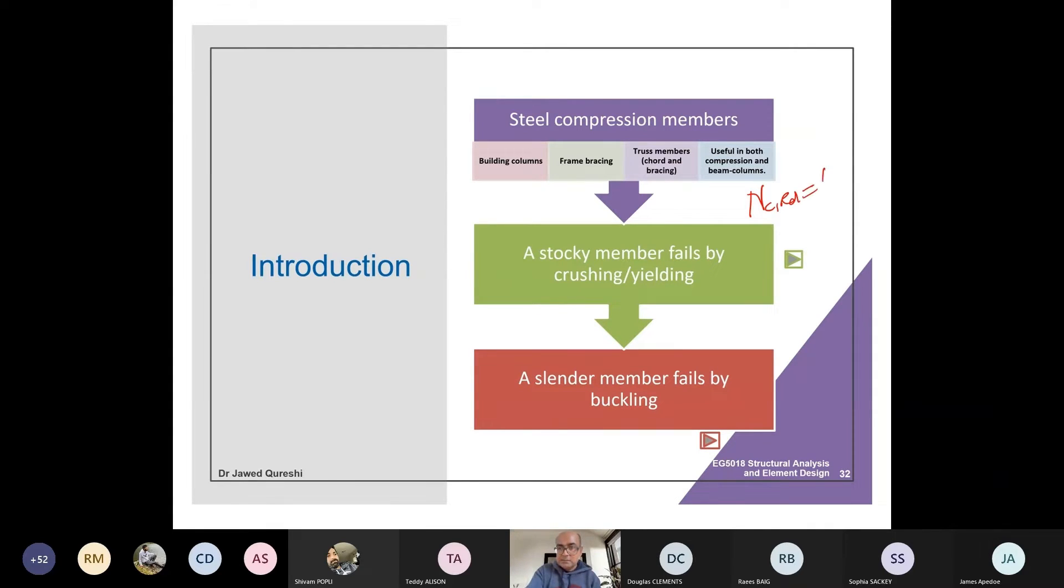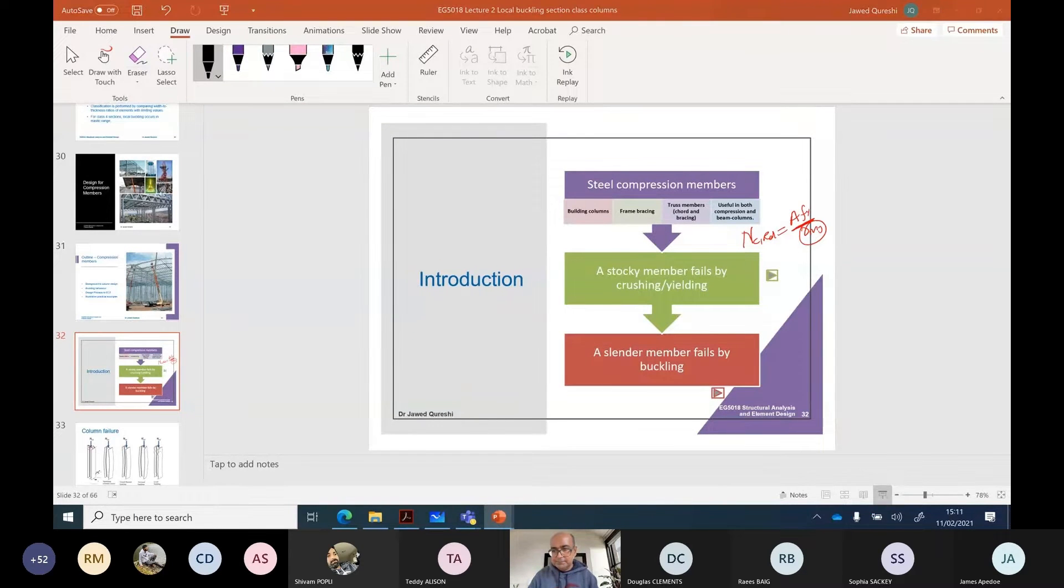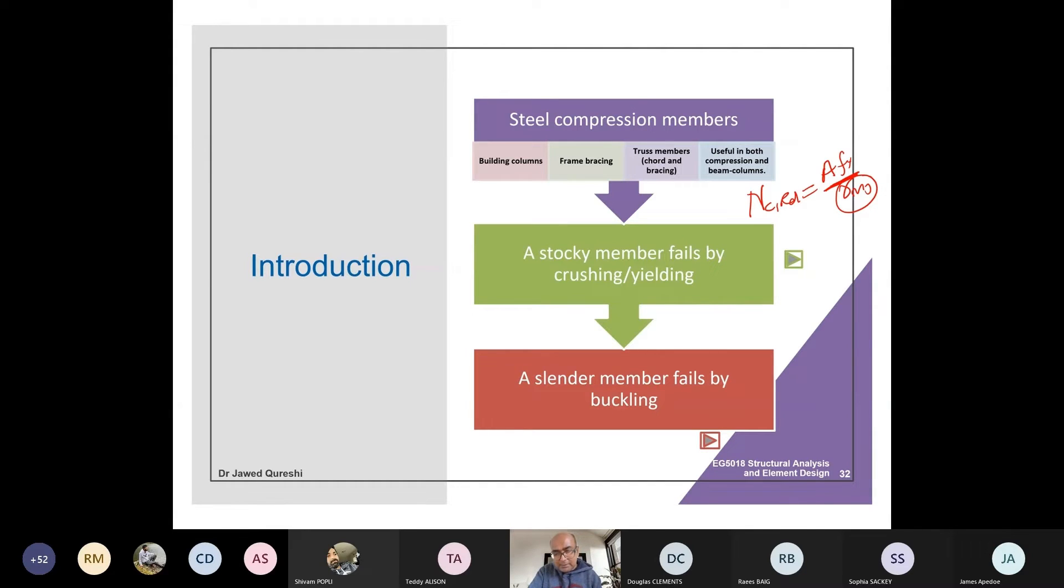Stocky columns fail by yielding or material failure. They utilize their full potential and material strength. Similar to tension resistance, compressive resistance NCRD is A·Fy over gamma M0, which is 1. The formula for compressive resistance of stocky or heavy columns is A·Fy. For slender members, they fail by buckling at a lower load than heavy columns. They fail by geometric instability termed as buckling. In this case, I work out NBRD or buckling resistance. Most practical columns fall between two extremes: one extreme is failing by crushing or yielding, the other is failing by elastic buckling. Normally, practical columns fall in between, so NBRD will certainly be worked out.